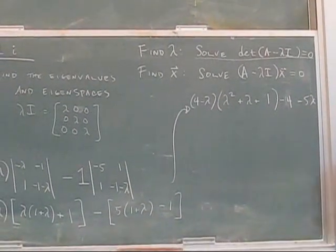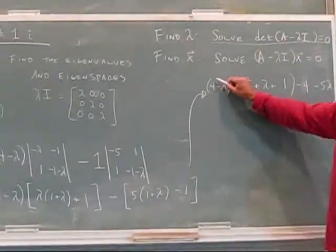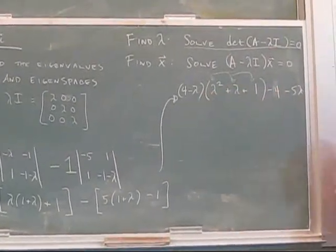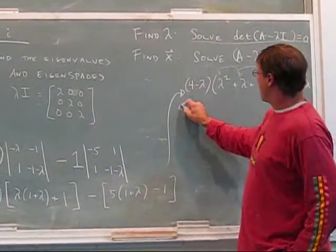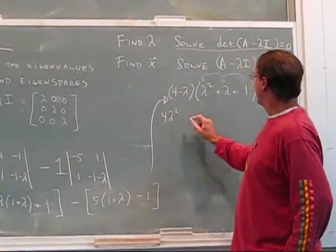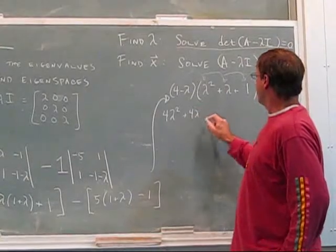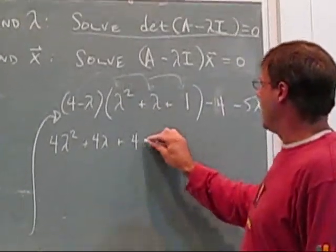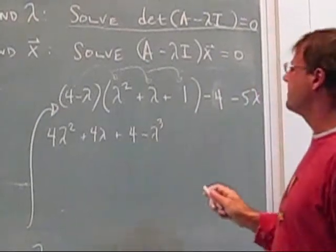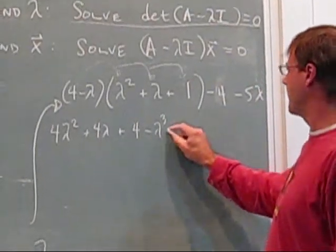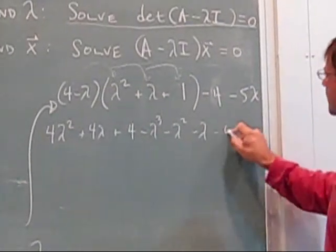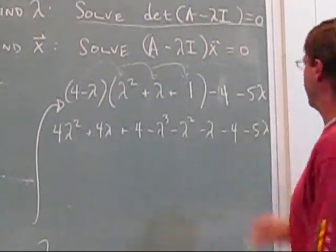Okay, let's multiply these out. Just be careful with this. Just take the 4 and multiply it by each thing, and take the negative lambda and multiply it by each thing. So this is 4 lambda squared plus 4 lambda plus 4 minus lambda cubed minus lambda squared minus lambda minus 4 minus 5 lambda.